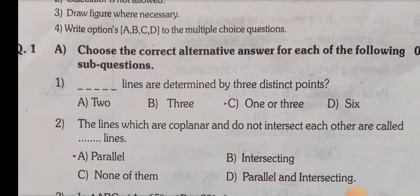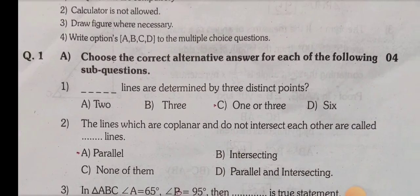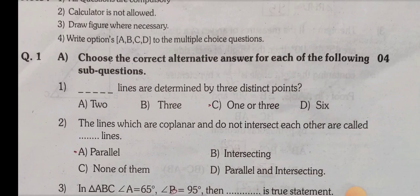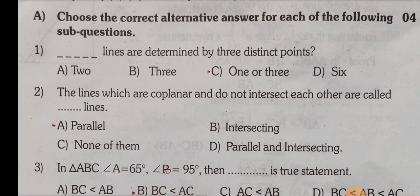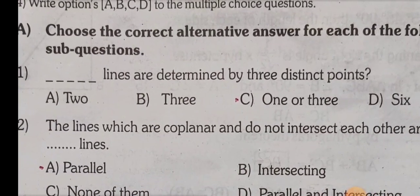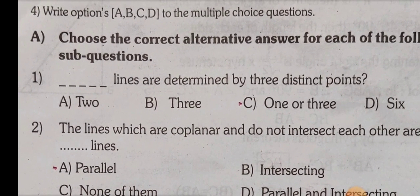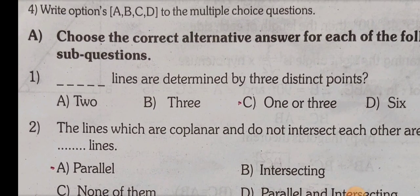Question 1a: Choose the correct alternative answer. First sub-question: the dash lines are determined by three distinct points. Options are: A) 2, B) 3, C) 1 or 3, D) 6. The correct option is C: 1 or 3.